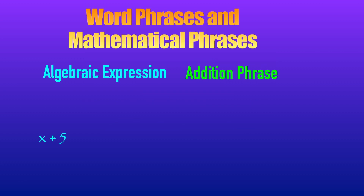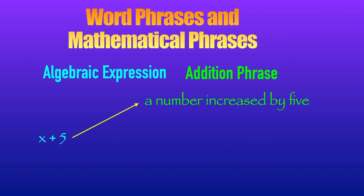I have an Algebraic Expression here. Let's say this is X plus 5. We will translate this into an addition phrase. One addition phrase for this expression is 'a number increased by 5.' We do not know what number that is, so let us represent that number as X. Another one: 'the sum of a number and 5.'